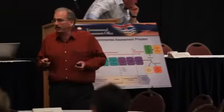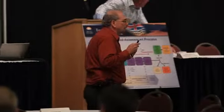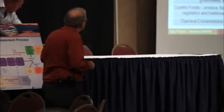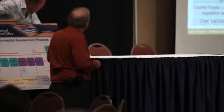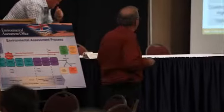For the effects assessment, everything stays the same — all of the equations, all of the assumptions, all of the consumption rate assumptions — except the chemical concentrations. In the baseline, those chemical concentrations are measured. We have the luxury of actually going out and measuring those things now. For the project, we have to look at model concentrations. So the only thing we're changing in all of those equations are the input numbers we use for the chemical concentrations.